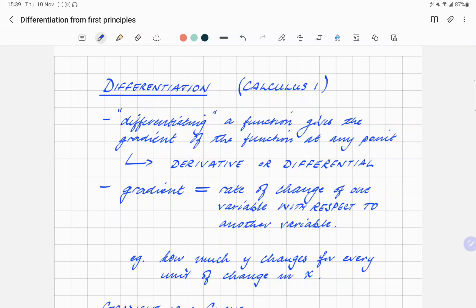What do we mean by differentiation? Differentiating a function gives the gradient of the function at any point, and what we find is the derivative or differential - interchangeable words. The gradient itself is the most important part of differentiation - the gradient is a rate of change of one variable with respect to another variable.